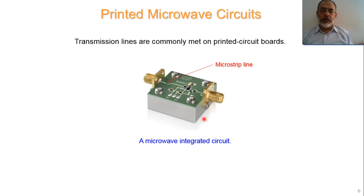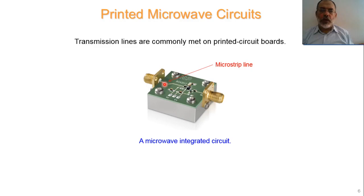Here we have an example of a microwave circuit. These are microstrip lines connected to lumped elements such as lumped resistors or lumped capacitors, and we have a monolithic microwave integrated circuit (MMIC). To connect this microstrip line to an external coaxial line, we need to introduce a connector that transitions from the coaxial configuration to the microstrip line configuration. The outer side of the coaxial structure connects to the ground of the microstrip line, and the inner conductor connects to the printed line.